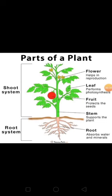Above the soil we have the main stem, branches, leaves, flowers and fruits. Plants have different parts and each part has a different role to play. Flowers help in reproduction. Leaves perform photosynthesis — a process by which leaves prepare food for the whole plant in the presence of sunlight. Just as our mother prepares food for us, the leaf prepares food for the plant. Fruit protects the seeds. Stem supports the plant. Roots absorb water and minerals. That's all about parts of a plant.